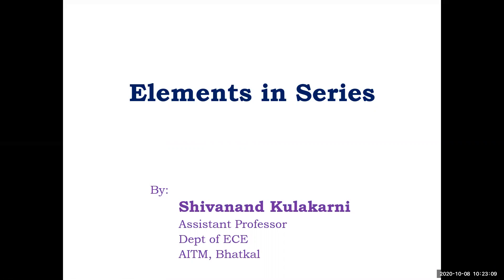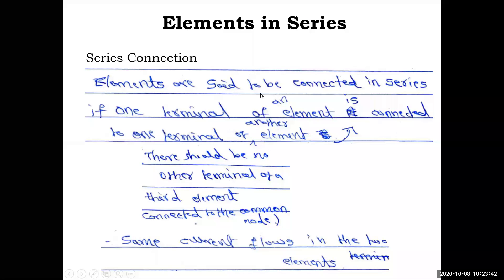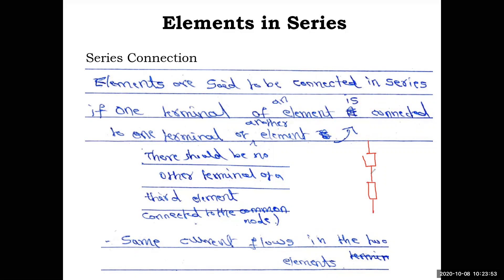In today's session we will see elements connected in series. In general, series connection means elements are said to be connected in series if one terminal of an element is connected to one terminal of another element — like a cascade connection. There should be no other terminal of a third element connected to the common node; otherwise it becomes a parallel or shunt connection.